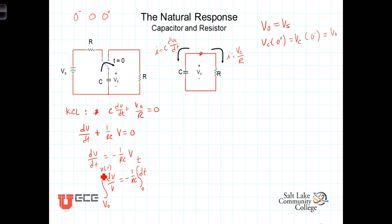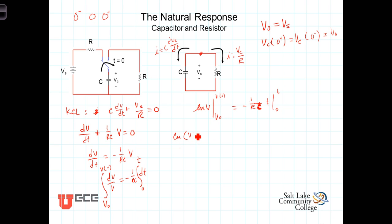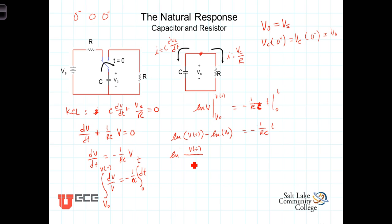We perform the integration: 1 over V dV gives us the natural log of V, evaluated from V0 to V of t on the left-hand side. On the right-hand side, we get negative 1 over RC times t evaluated from 0 to t. Evaluating both sides, we get the natural log of V of t minus the natural log of V0, which equals negative t over RC. Combining the log terms on the left into a single log, we have the natural log of V of t over V0 equals negative t over RC.